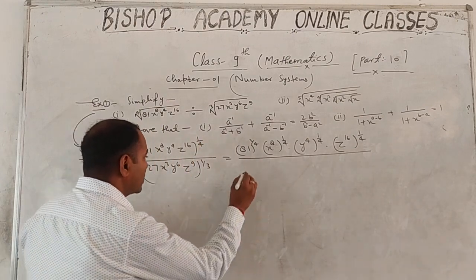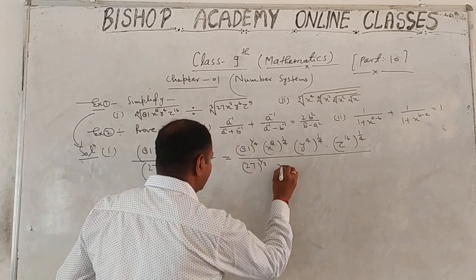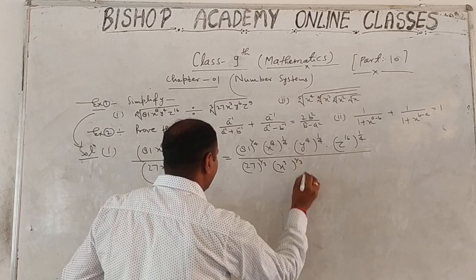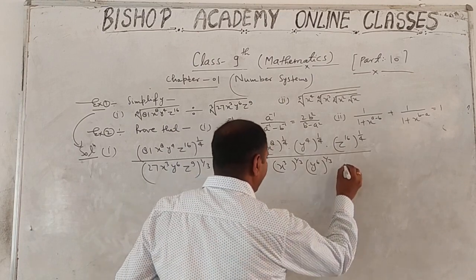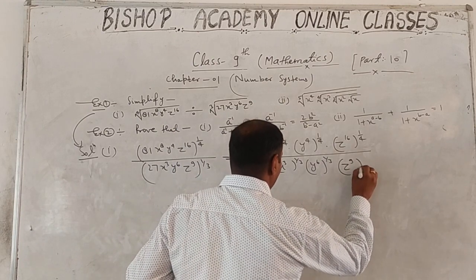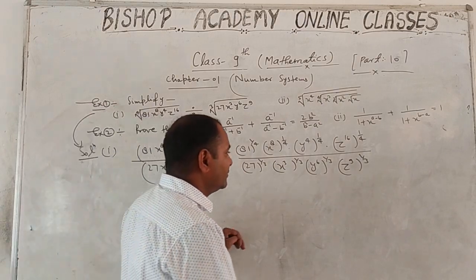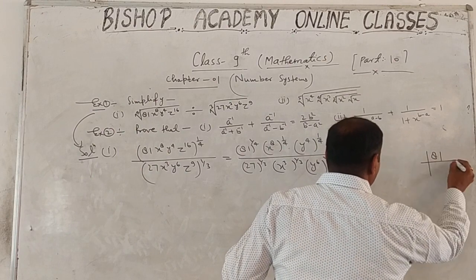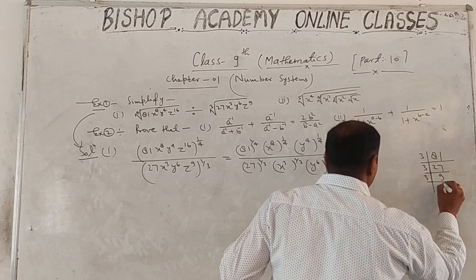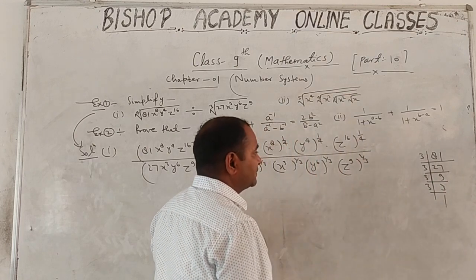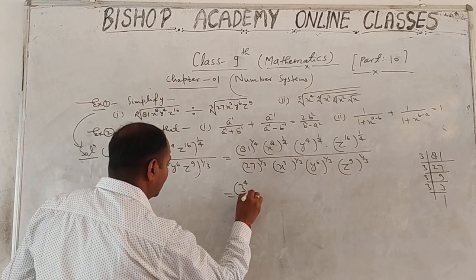For the denominator: 27^(1/3) · x^(3·1/3) · y^(6·1/3) · z^(9·1/3). Now we apply prime factorization: 81 = 3⁴, so 81^(1/4) = (3⁴)^(1/4), and the power cancels to give 3. Similarly 27 = 3³, so 27^(1/3) = (3³)^(1/3) = 3.